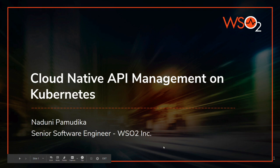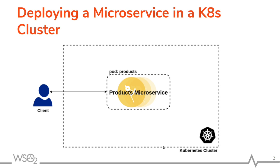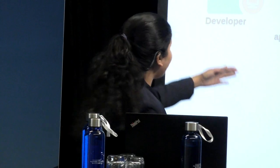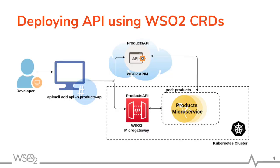Good evening, everyone. Cloud native API management on Kubernetes. Say I need to get a list of products or need to know the details of a particular product. I have created a small microservice and deployed it in my Kubernetes cluster. My requirement is to expose that products microservice via an API. To do that, I'm using my WSO2 micro-gateway. As a developer, I'll be executing a set of commands, and then I have my products microservice deployed in WSO2 micro-gateway, and at the same time, in the API manager portal as the products API.